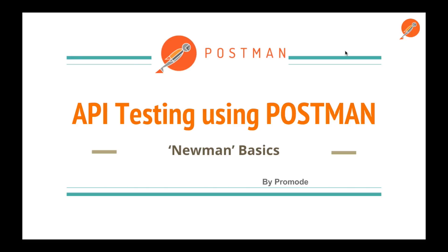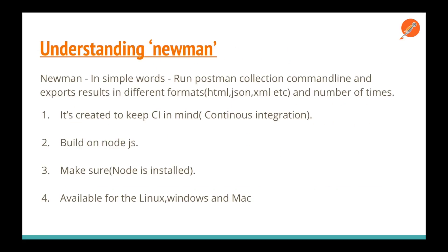Newman is, in simple words, a command line tool for Postman where you can generate HTML and JSON reports based on your Postman collection's tests. For example, you have certain tests written in your collection and you want to run them. You can use this Newman command line tool to run those collections and get results in the form of HTML or JSON.